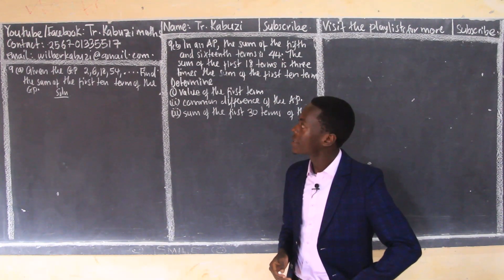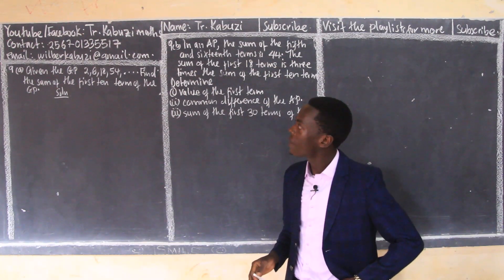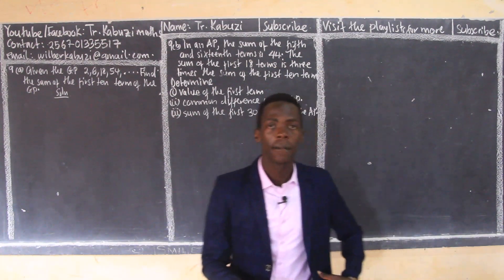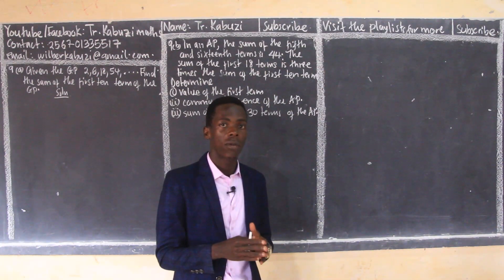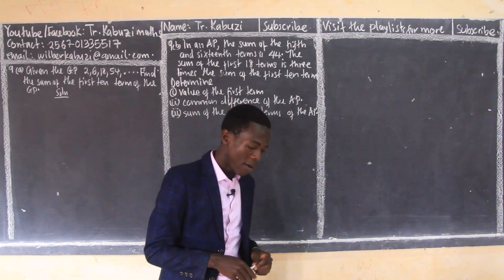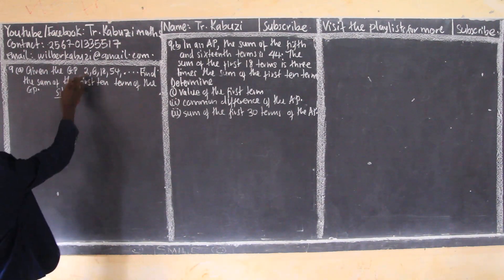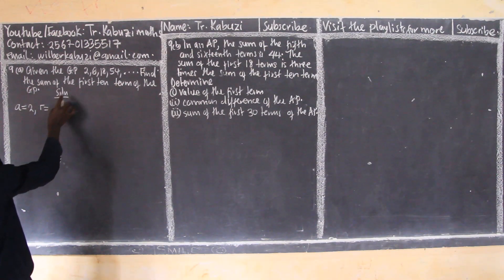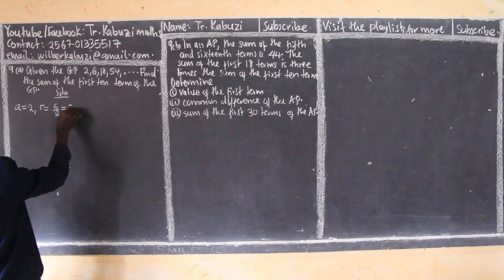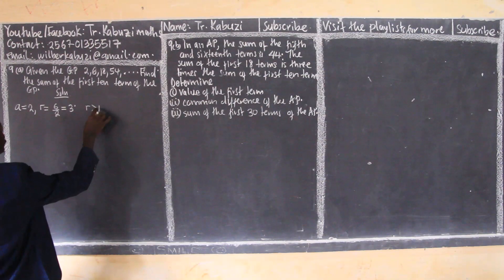The question says: given that the GP is 2, 6... find the sum of the first ten terms of the GP. Now you know that we have two formulas for the sum of a GP, but that one we identify or we conclude based on the common ratio. So from here we can first get our common ratio. Our first term is going to be 2, then our common ratio R is given by 6 over 2, which will be 3. And you realize that from there our R is greater than one.